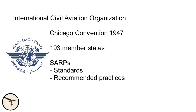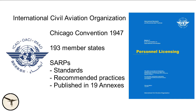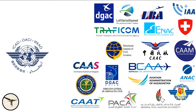ICAO issues standards and recommended practices for civil aviation, called SARPs, which are published as annexes to the Chicago Convention — all 19 of them. Annex 1 is about personnel licensing and includes flight crew, air traffic controllers, aircraft maintenance, and medical standards. The annexes are not rules but standards and recommendations; it is up to each member state to define their own rules. Therefore, we have 193 different civil aviation authorities who issue licenses. So we can say every pilot license is an ICAO license.